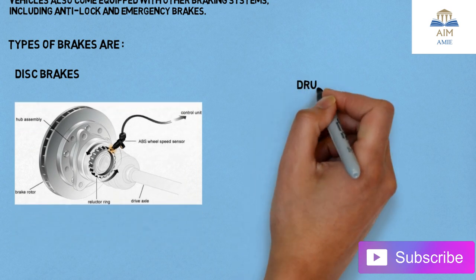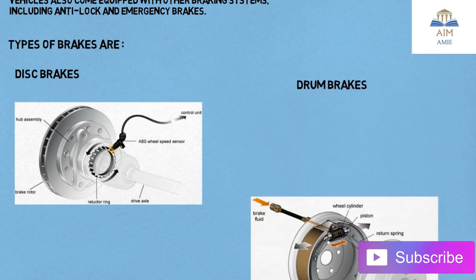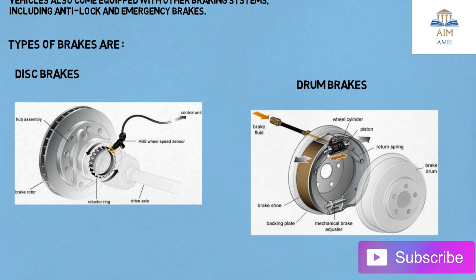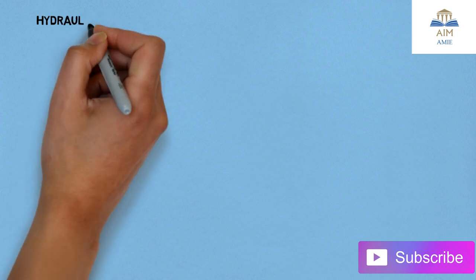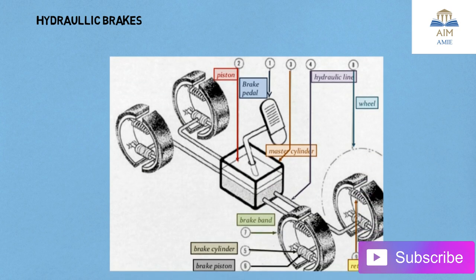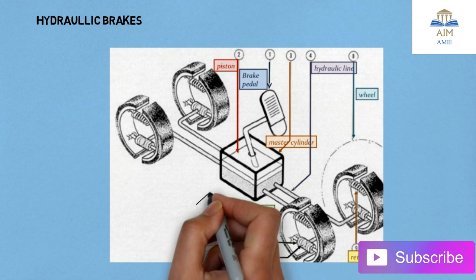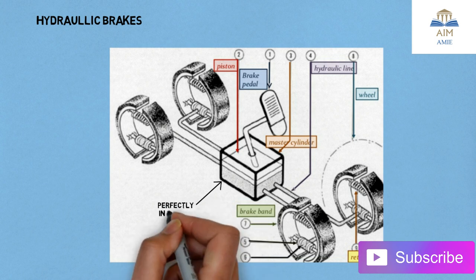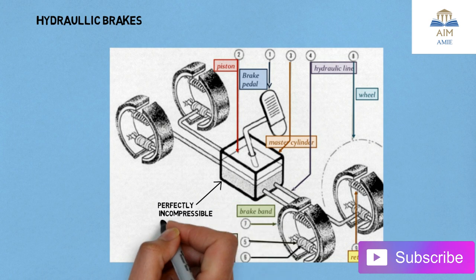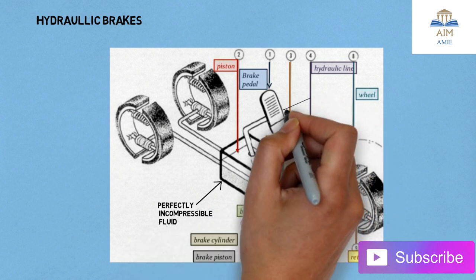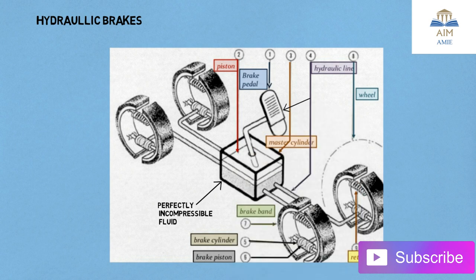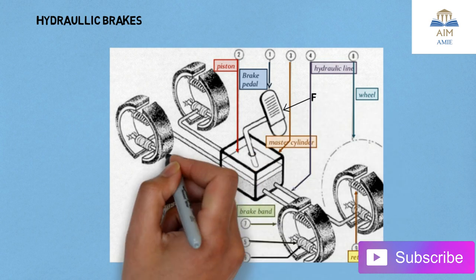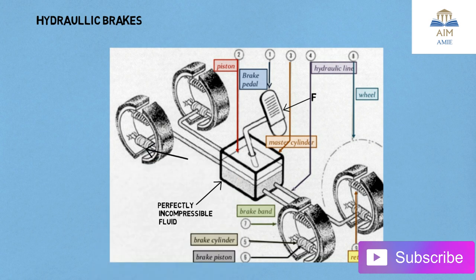The next one is the drum brake — the shoe is kept inside the wheel and is expanded by the cylinder. The next important type is the hydraulic brakes. In this image there is the master cylinder; inside the master cylinder the oil is kept — hydraulics means oil is used. This is a perfectly incompressible fluid. If we apply force F on the pedal, it pushes down the piston, and that piston exerts force in the oil. The oil is then transmitted through four cylinders, by which the shoe gets expanded.